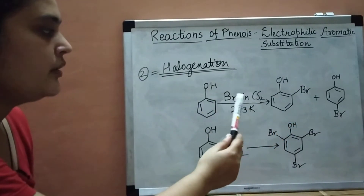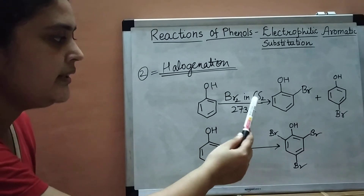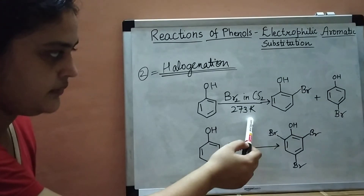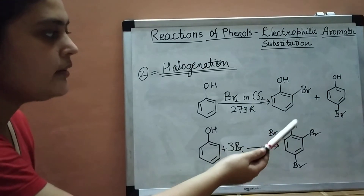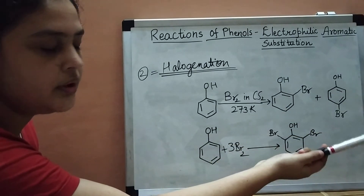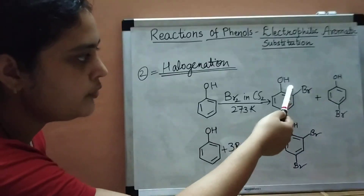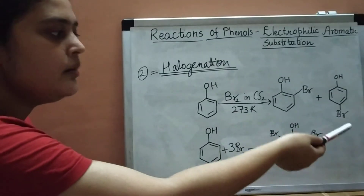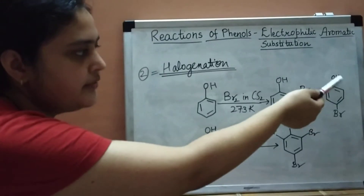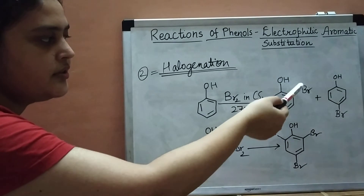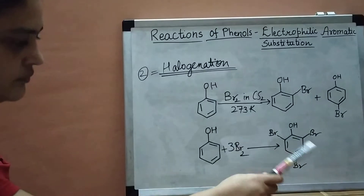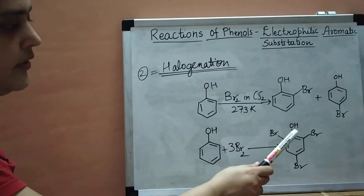The first way: if you want mono-bromophenol, you add bromine in carbon disulfide (CS2) as reagent at a low temperature like 273 K. You will get two products — ortho-bromophenol and para-bromophenol. Para-bromophenol is the major product because of less steric hindrance, while ortho-bromophenol is the minor product due to more steric hindrance between the bromine and the hydroxy group.